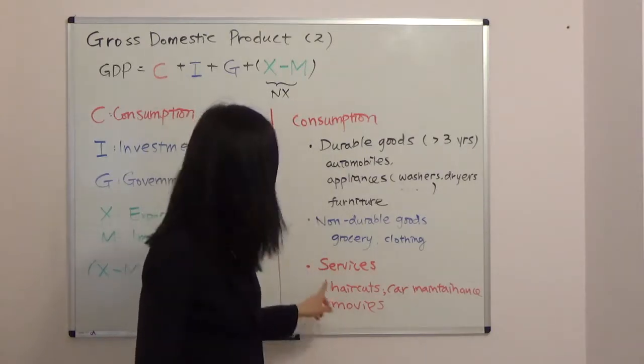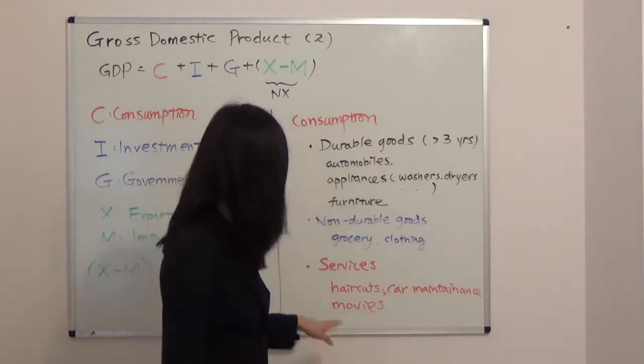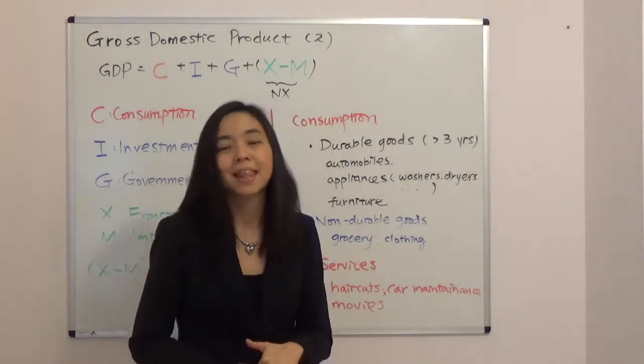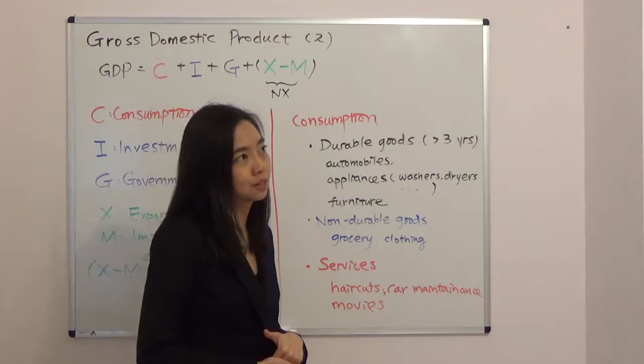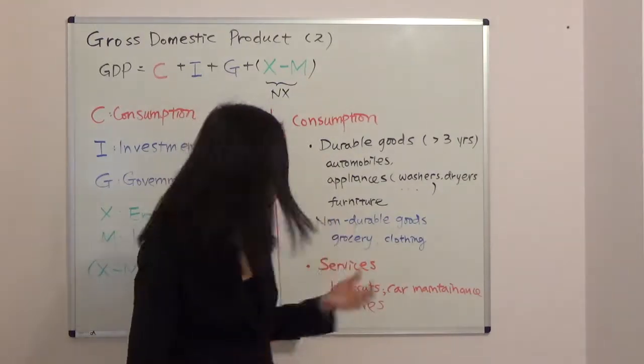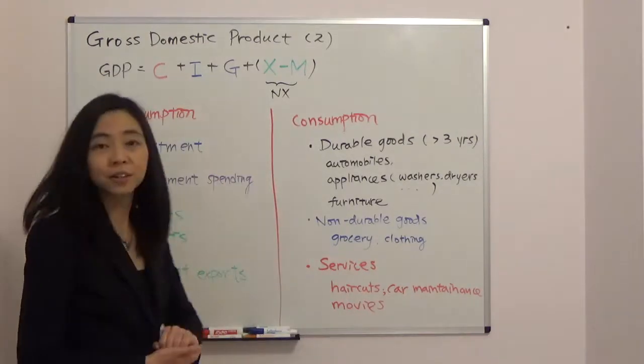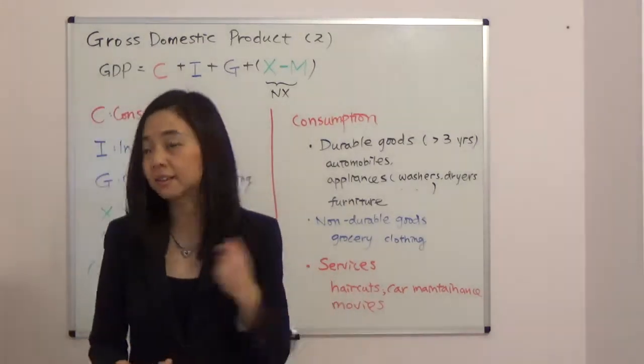The last item is services—the services you receive including haircuts, car maintenance, movies you watch, your Netflix subscription, and medical services. So that's our consumption, and I hope this helps.